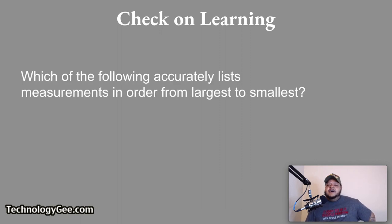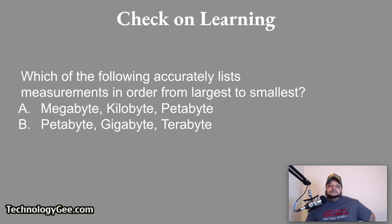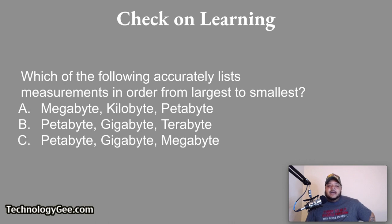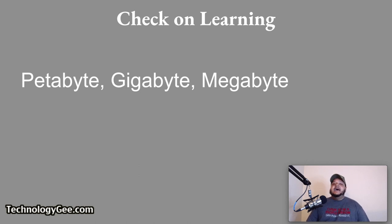Second question: which of the following accurately lists measurements in order from largest to smallest? The options include megabyte/kilobyte/petabyte, petabyte/gigabyte/megabyte, or gigabyte/kilobyte/megabyte. The correct answer is petabytes, gigabytes, and megabytes — from largest to smallest.